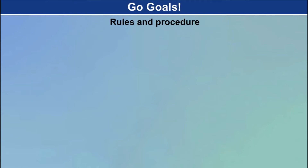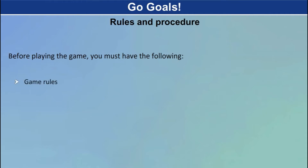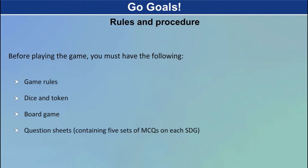Rules and procedure. Before playing the game, you must have the following: game rules, dice and token, board game, and question sheets containing 5 sets of MCQs on each SDG.